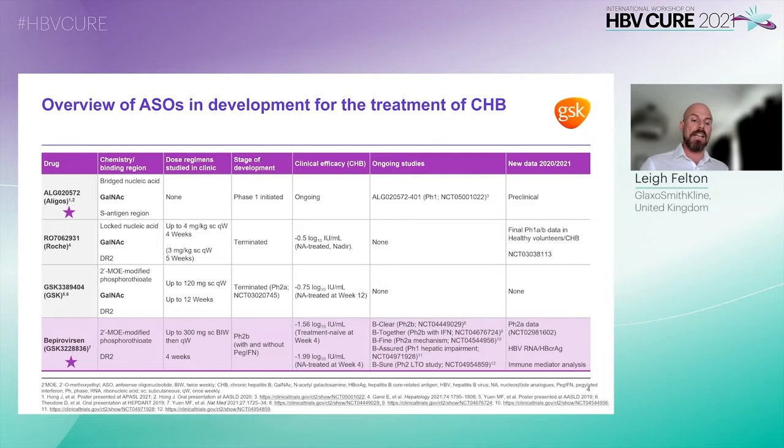Bepirovirsen, shown at the bottom, is the most advanced in development with multiple phase IIb studies ongoing. It should be noted that GSK3389404 has the same sequence as bepirovirsen but has the GalNAc conjugation, whereas bepirovirsen is the naked ASO.